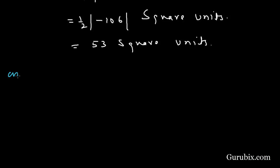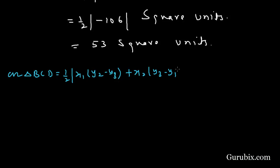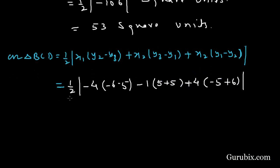Now we shall find the area of triangle BCD. Area of triangle BCD = (1/2)|x1(y2 - y3) + x2(y3 - y1) + x3(y1 - y2)|. Here x1 is -4, y2 - y3 = -6 - 5 = -11; x2 is -1, y3 - y1 = 5 - (-5) = 10.